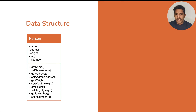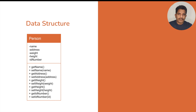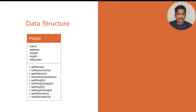Let us take a small example — a data structure for a Person class. Here we have variables: name, address, weight, height, and ID number. The hyphens indicate these variables are private, so no one from outside the class can access them directly. For the behavior, we have all the get and set methods for these variables. These methods are exposed so that whoever wants to access this data must do so only through the getter and setter methods.